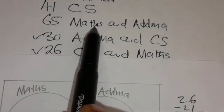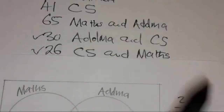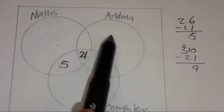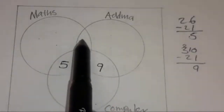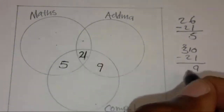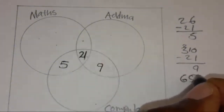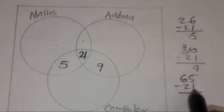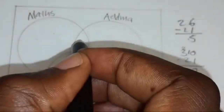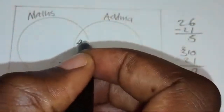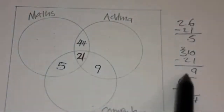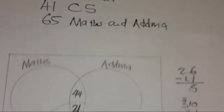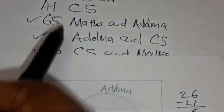They are saying 65 teachers taught Maths and ADMA. The intersection of Maths and ADMA already has 21, so you cannot just put 65 there. You say 65 minus 21: 5 minus 1 is 4, 6 minus 2 is 4, giving 44 teachers here — so that 44 plus 21 gives back 65.